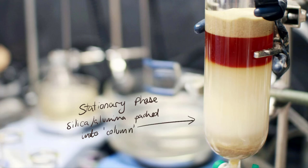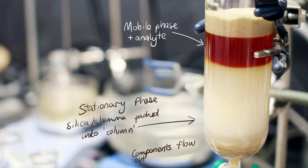The mobile phase is flowed through the column until it is uniformly wet, and then the analyte is added along with more of the mobile phase. Unlike in thin layer chromatography, the components of the mixture can be collected at the bottom of the column as they flow out.